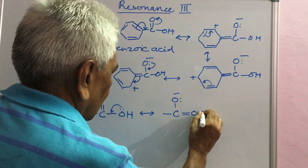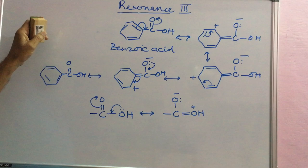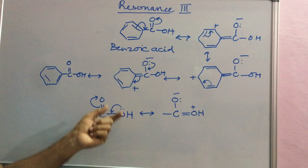So carboxyl group is the hybrid of these two structures. So I think the writing of resonance structures is quite clear now and in the next lecture we will see the consequences of resonance, that is effect on the bond length and the stabilization of the molecule.